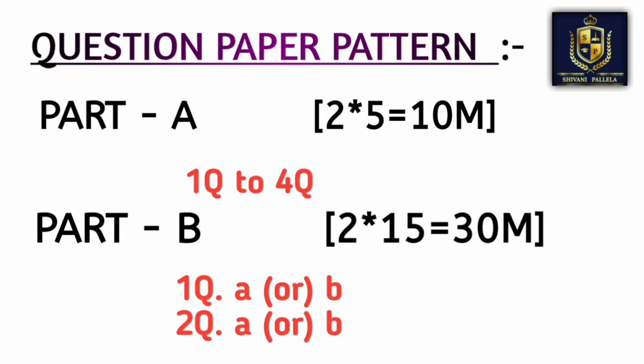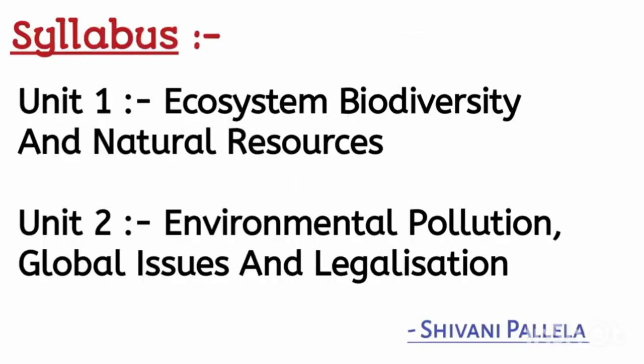Coming to the question paper pattern: in Part A, they will give four questions and you need to attempt any two. Each question carries five marks, so Part A consists of 10 marks total. Questions one and two come from Unit 1, questions three and four from Unit 2. In Part B, the first question comes from Unit 1 and the second from Unit 2, each carrying 15 marks.